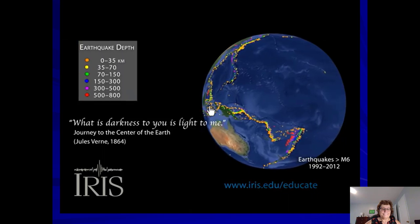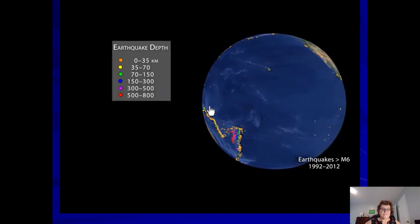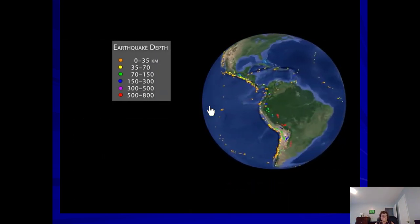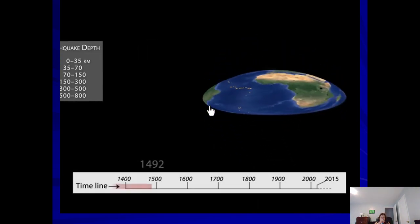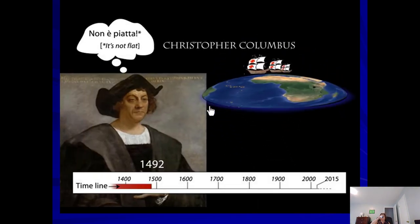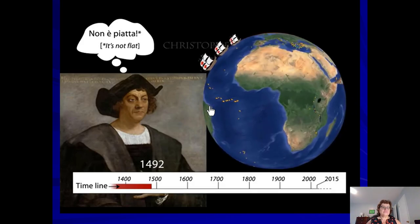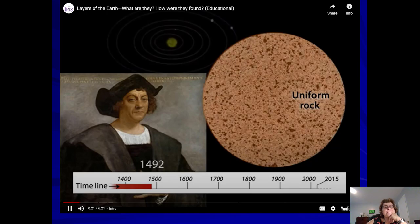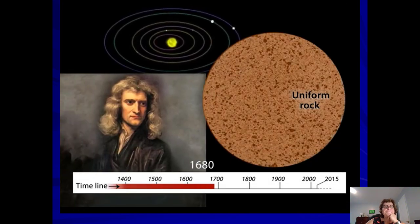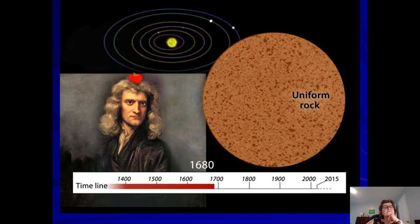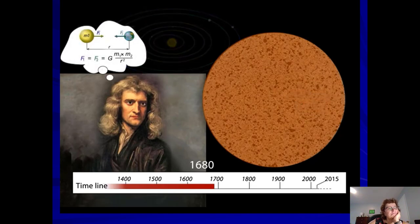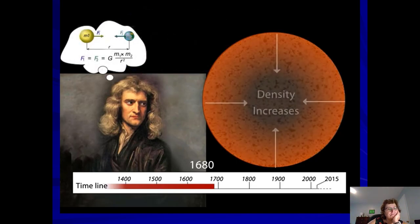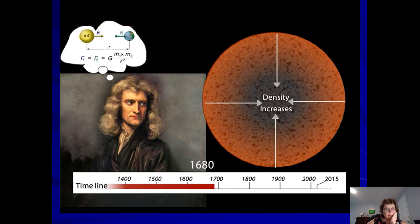Much of our knowledge of Earth's insights comes from monitoring the thousands of earthquakes that occur every year. Five centuries ago, the world had mostly accepted that the Earth was not only a sphere but was thought to be of uniform rock throughout. Two hundred years later, Sir Isaac Newton, studying our planetary system, calculated that the interior of the Earth must be made of far denser material than the surface rock.